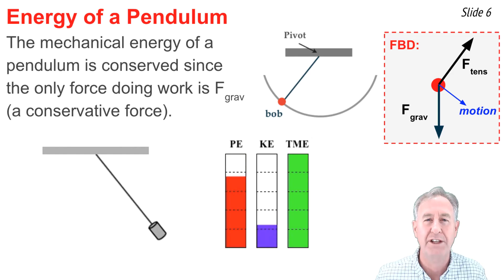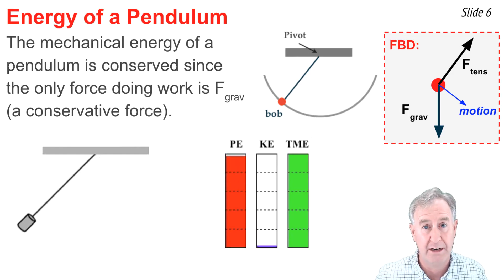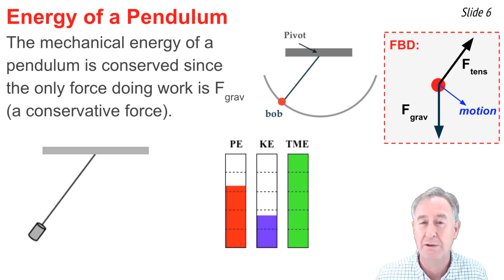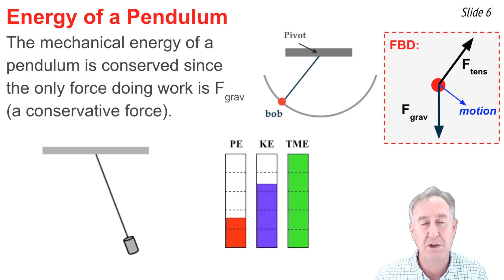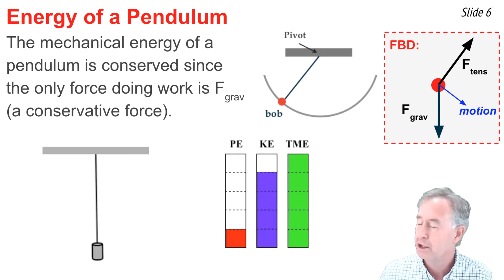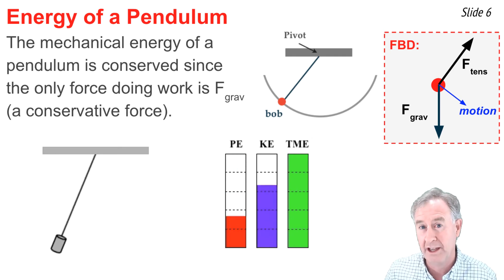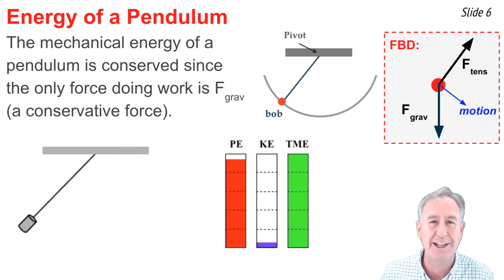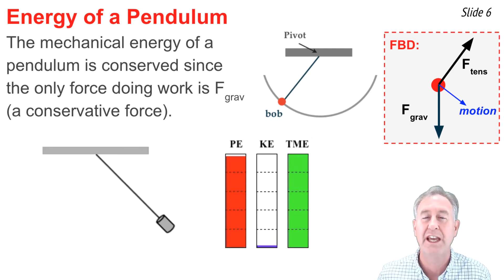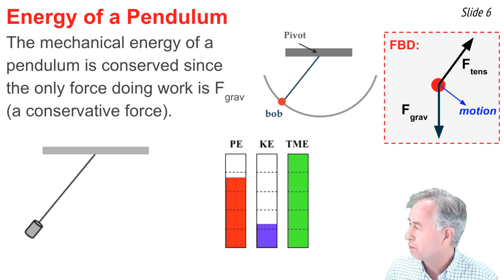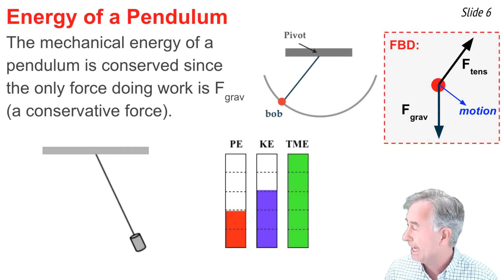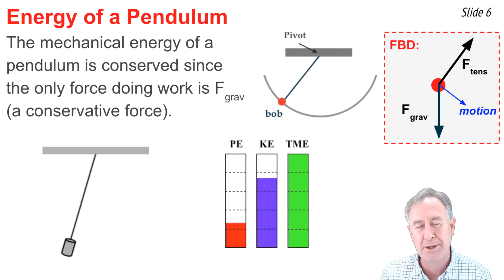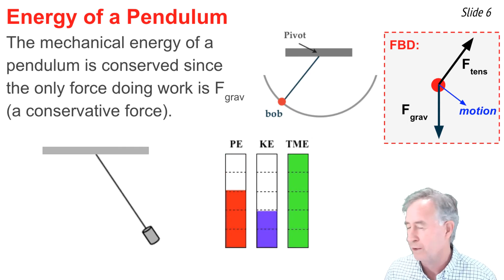This concept is often illustrated by a bar chart diagram. The bar chart shows the relative amount of kinetic and potential energy over the course of motion and often shows the total amount of energy. As the pendulum moves downwards it's losing potential energy and gaining kinetic energy, and as it moves upwards it's losing kinetic energy and gaining potential energy. But the total mechanical energy of the pendulum bob remains constant over the course of its motion.